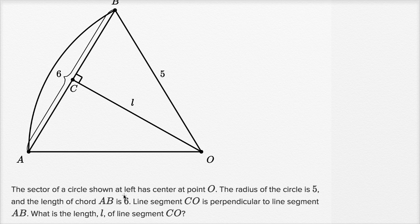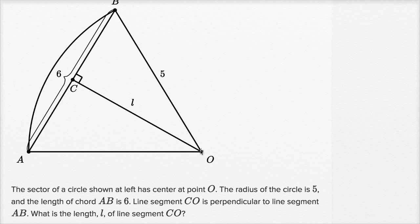The sector of a circle shown at left, I pasted it up here, has center at point O. The radius of the circle is five. So we have part of a circle right over here with that arc AB, and you see the radius from the center to any point on that circle.